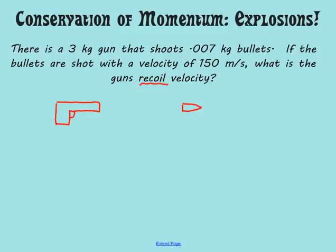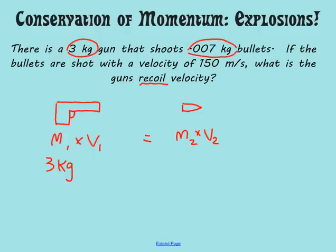So it says there's a three kilogram gun. So really, the momentum, we'll call this M1V1, the momentum M times V of the gun, is going to be equal to M2V2. And so if we're starting to fill things in here, we know we have a three kilogram gun, so we're going to put that underneath the mass of the gun. It shoots .007 kilogram bullets.